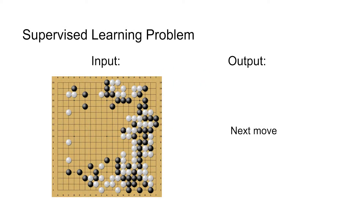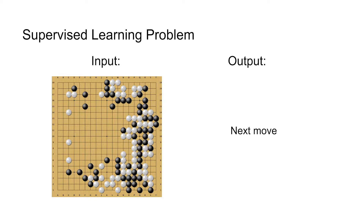Notice that Go is a supervised learning problem. We have a board state which contains a bunch of points that are open, some have white stones on them, and some have black stones on them. And the goal of any Go player is to find what the next move is.